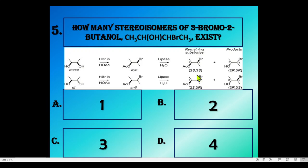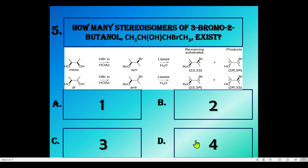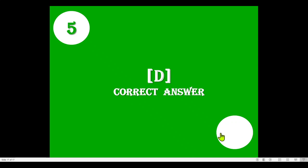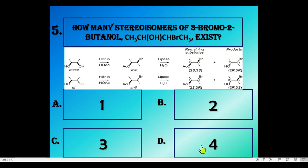There are two chiral centers in this compound, giving possibilities: 2S,3S; 2R,3R; 2S,3R; and 2R,3S. In some cases if it is a meso compound, even though chiral centers are present the compound may not be chiral overall. Considering all these possibilities, option D — four stereoisomers — is the correct answer for this question. We will have more discussion in forthcoming videos.